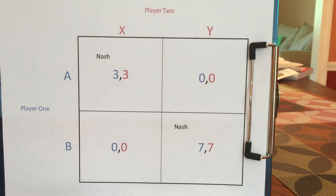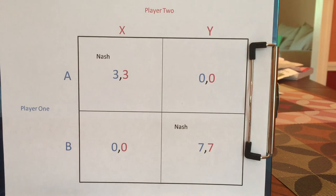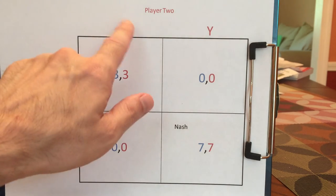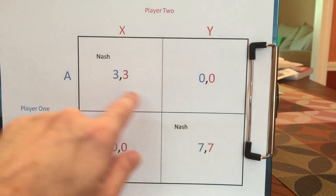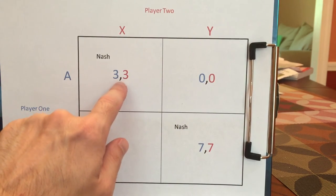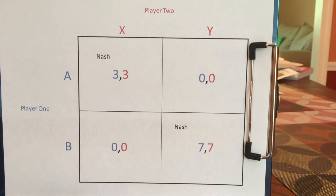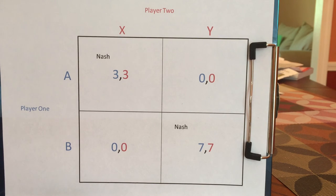Because if you had done something different — say player two had done something different — you would have ended up somewhere worse. So this is a no-regrets Nash Equilibrium. The key for Nash Equilibrium is you don't regret your actions under the assumption that what the other person did was completely independent of anything you could have done. Given what the other person did is fixed and unalterable, you don't regret your choice.